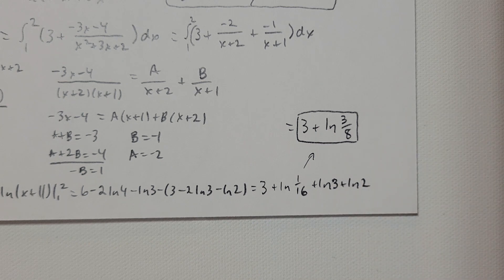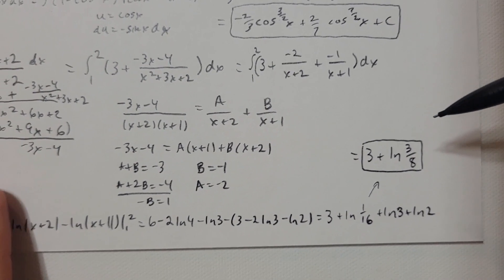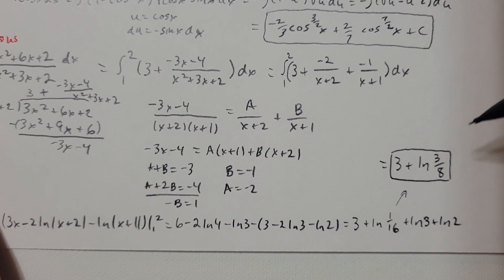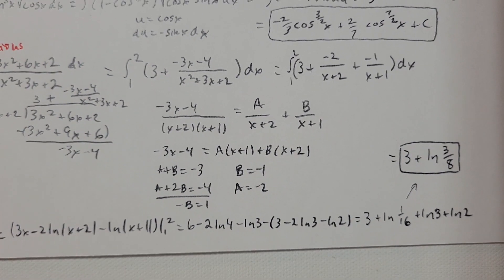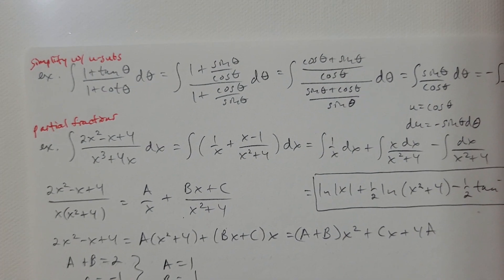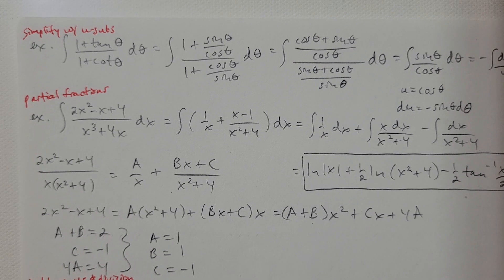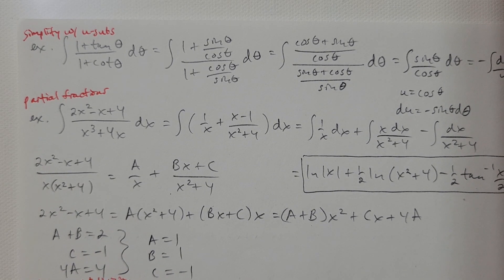3 plus ln(3/8) is the simplified exact answer for that integral. Make sure that you're giving exact answers for these problems. Let's take a look at another one: the antiderivative of (1 plus tangent theta) divided by (1 plus cotangent theta), d-theta.